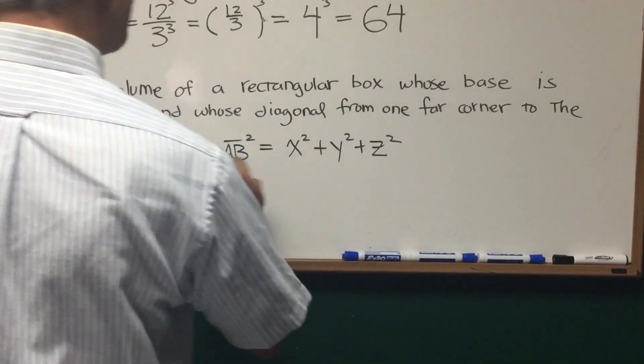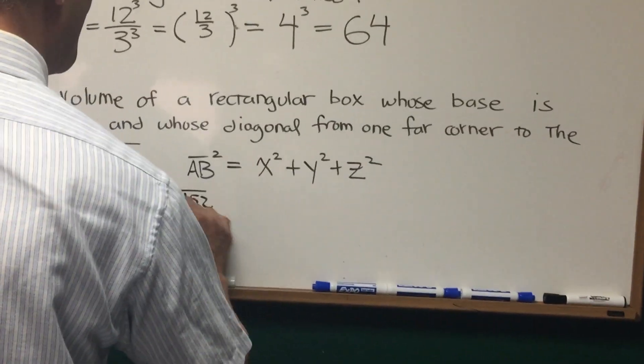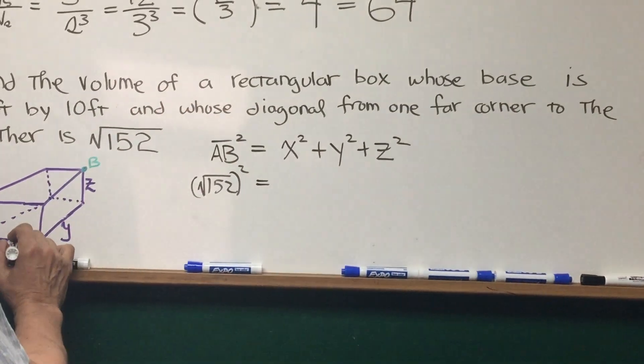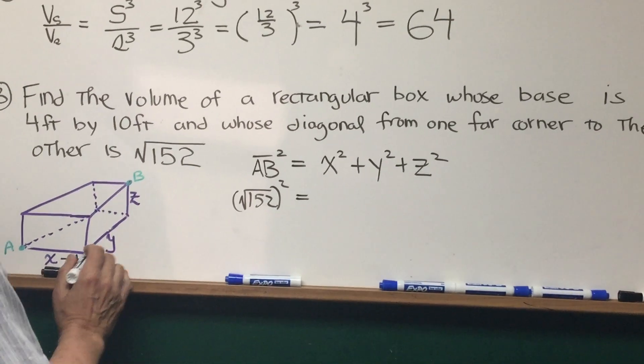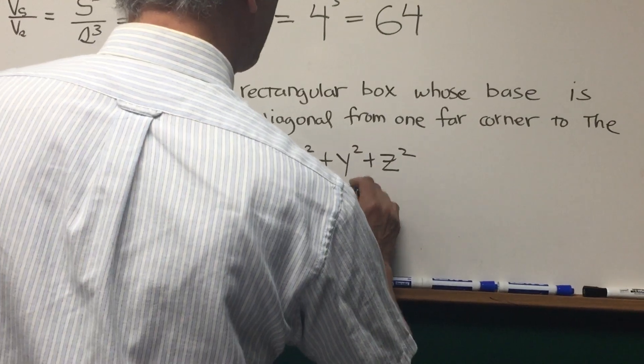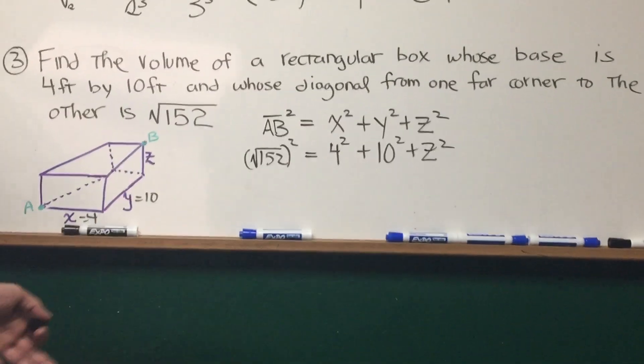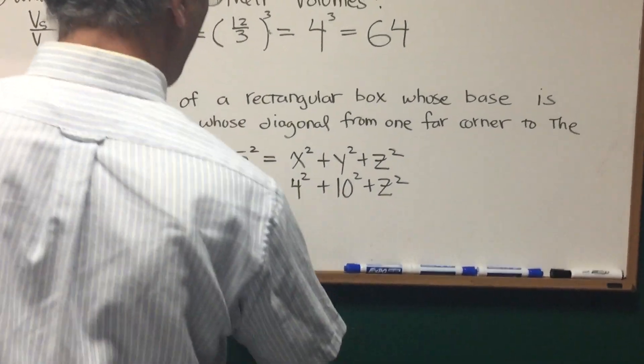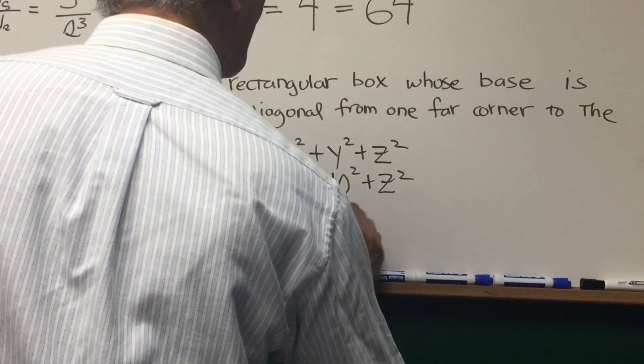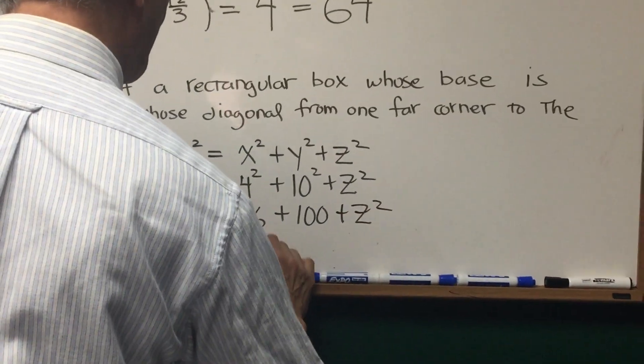Okay, so square root of AB squared, well, this is the square root of 152 squared equals x squared. Well, let's see. The rectangular box, we'll say x is equal to 4 and y is equal to 10, so this is equal to 4 squared plus 10 squared plus z squared, and now we're going to solve for z. We're going to solve for the remaining height. So the square root of 152 squared is 152, 4 squared is 16, 10 squared is 100 plus z squared.